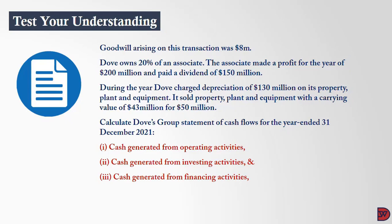DAF owns 20% of an associate. The associate made a profit for the year of 200 million dollars and paid a dividend of 150 million. During the year, DAF charged depreciation of 130 million on its property, plant and equipment. It also sold property, plant and equipment with a carrying value of 43 million dollars for 50 million dollars. We need to calculate the DAF Group statement of cash flows for the year ended 31st December 2021.